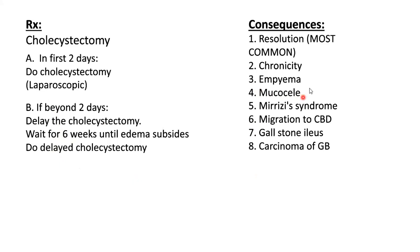Complications of acute cholecystitis or chronic calcular cholecystitis if untreated include: empyema, mucocele, Mirizzi syndrome, stone migration causing common bile duct stones, gallstone ileus, and gallbladder carcinoma from chronic irritation. The most common outcome of acute cholecystitis is resolution, but cholecystectomy is performed to prevent these potential complications.